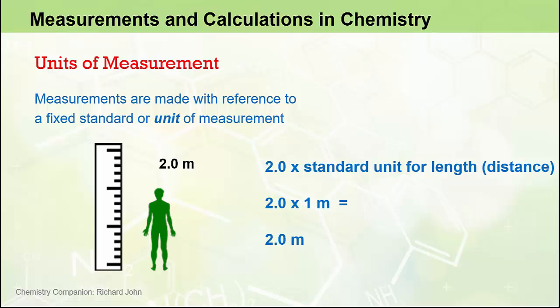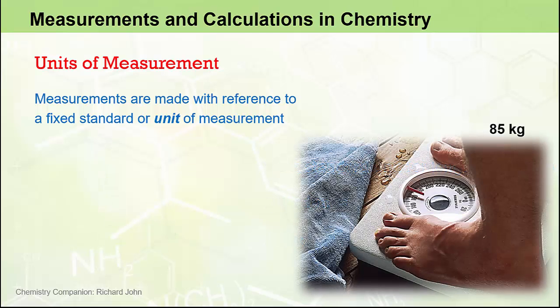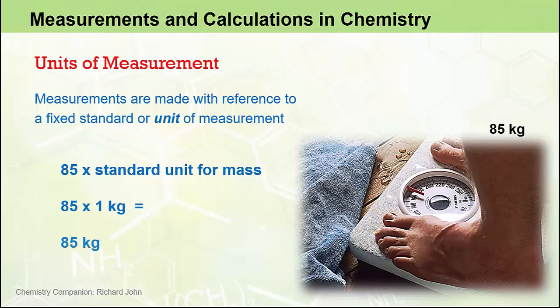And 2.0 times 1 m is 2.0 m. Similarly, when we make the claim that someone has a mass of 85 kg, we are actually saying that their mass is 85 times the standard unit for mass, which is the kg. 85 times 1 kg being 85 kg.